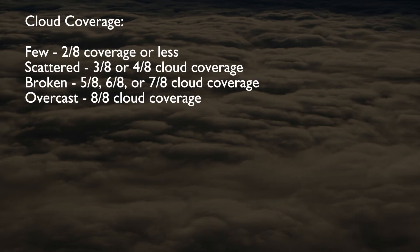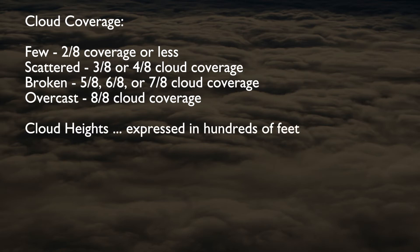Next is cloud coverage and heights. Cloud coverage is described as few, scattered, broken, or overcast. Few means the cloud layer covers 2 eighths of the sky or less. Scattered means the layer covers 3 or 4 eighths of the sky. Broken clouds cover 5, 6, or 7 eighths of the sky. And an overcast layer covers 8 eighths of the sky. The three numbers following the sky coverage indicate the height above the ground of the cloud bases in hundreds of feet.